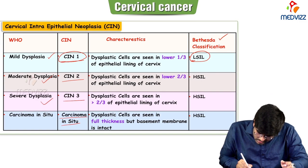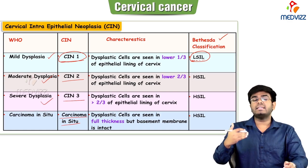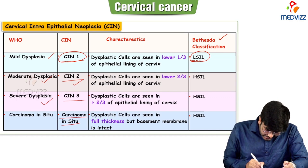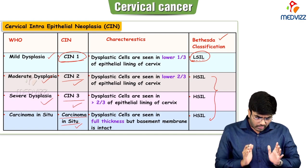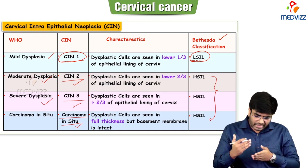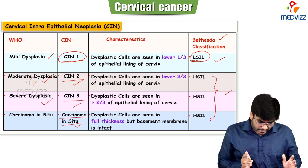CIN2, CIN3, and carcinoma in situ according to Bethesda classification are regarded as high-grade lesions. In CIN1, the dysplastic cells are present in the lower one-third of the epithelial lining of the cervix. In CIN2, there is moderate dysplasia — the dysplastic cells are seen in the lower two-thirds. CIN1 is lower one-third, CIN2 is lower two-thirds of the epithelial lining.